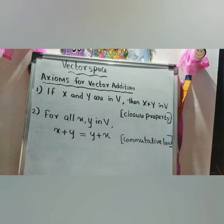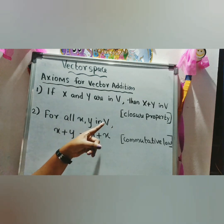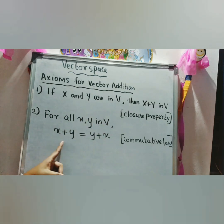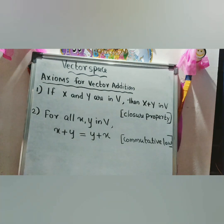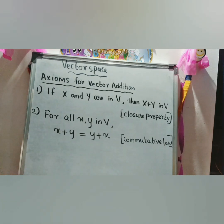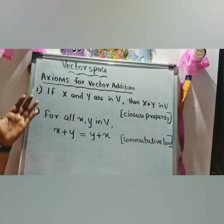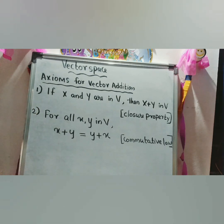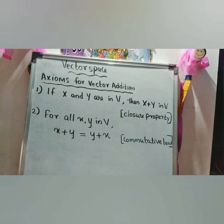Second property: for all x, y in V, x plus y equals y plus x. This is known as the commutative law. Third property: for all x, y, z in V, x plus (y plus z) equals (x plus y) plus z.